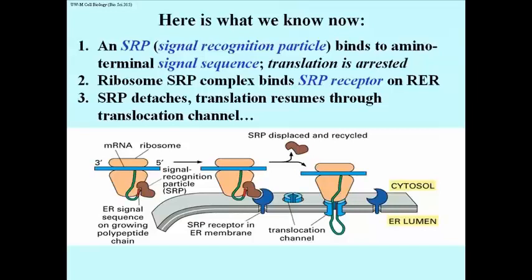There is a particle in the cytoplasm that actually recognizes the signal peptide as it emerges from a ribosome, shown here on the left. It is called the signal recognition particle, or SRP.